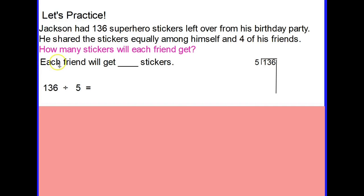What we are solving for is this question: how many stickers will each friend get? Because we're working with division and he's going to share them equally among himself and four friends, we are dividing 136 divided by 5 because this is a total of five people, not just Jackson himself. We have to include him within the problem.